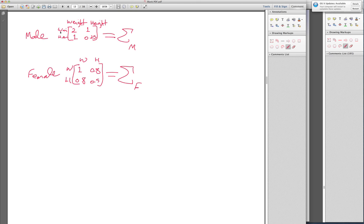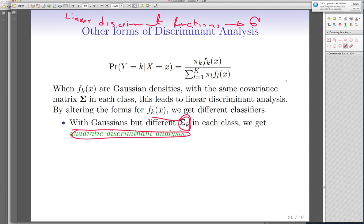So that is a covariance matrix for males. This is covariance matrix for females. And as you can see here, they're no longer the same. So if we just allow this case to be here, then we are dealing with quadratic discriminant analysis.